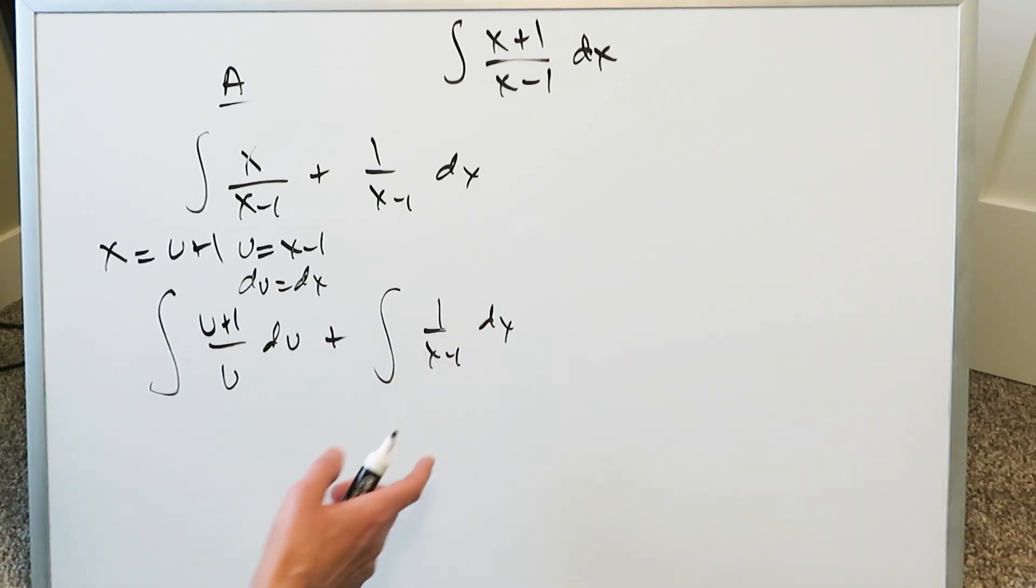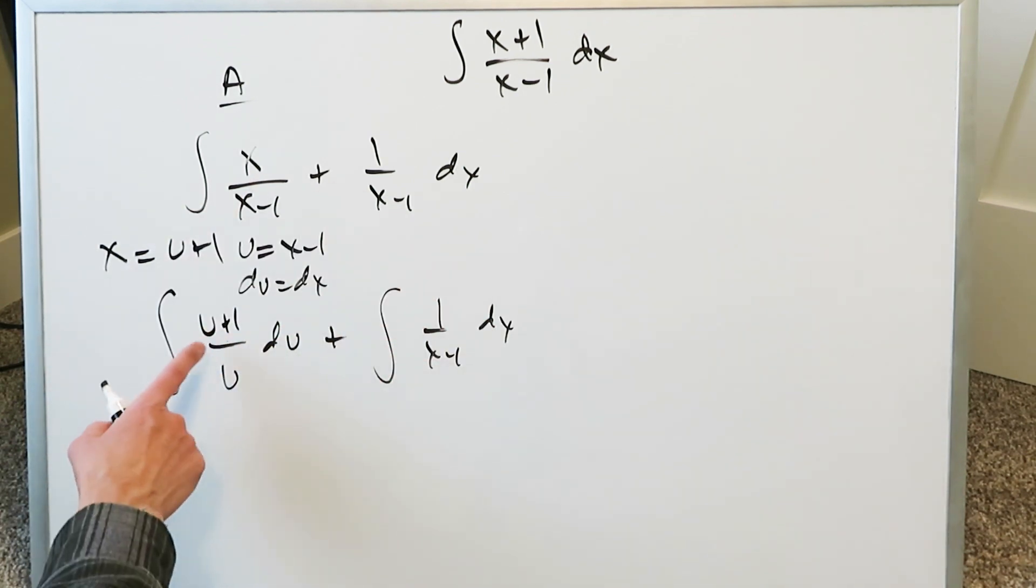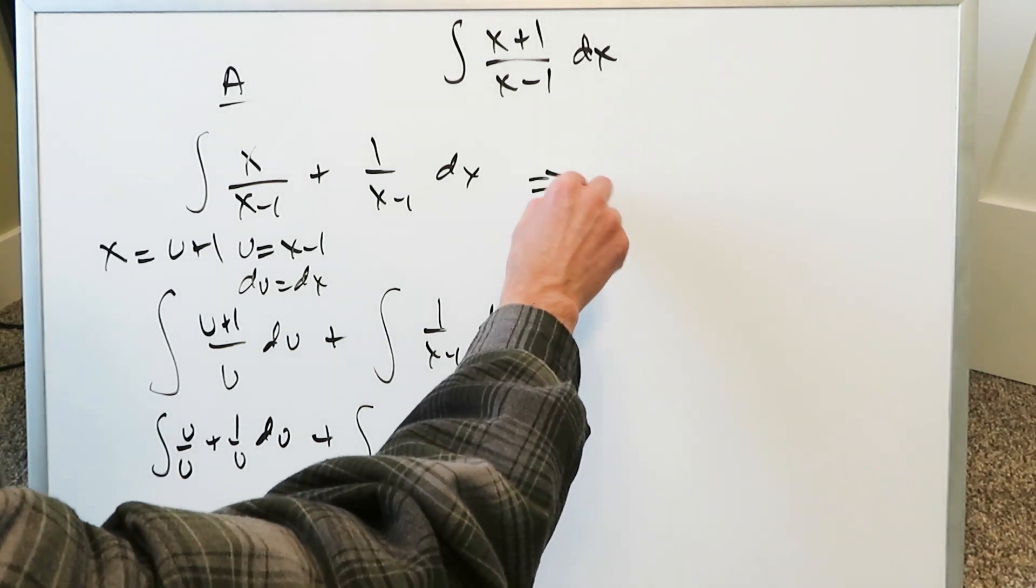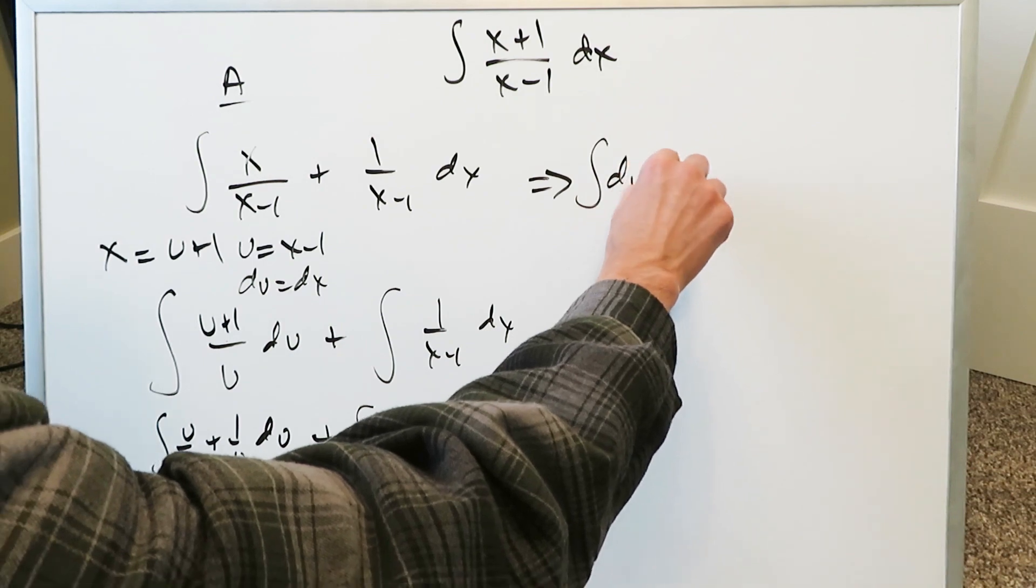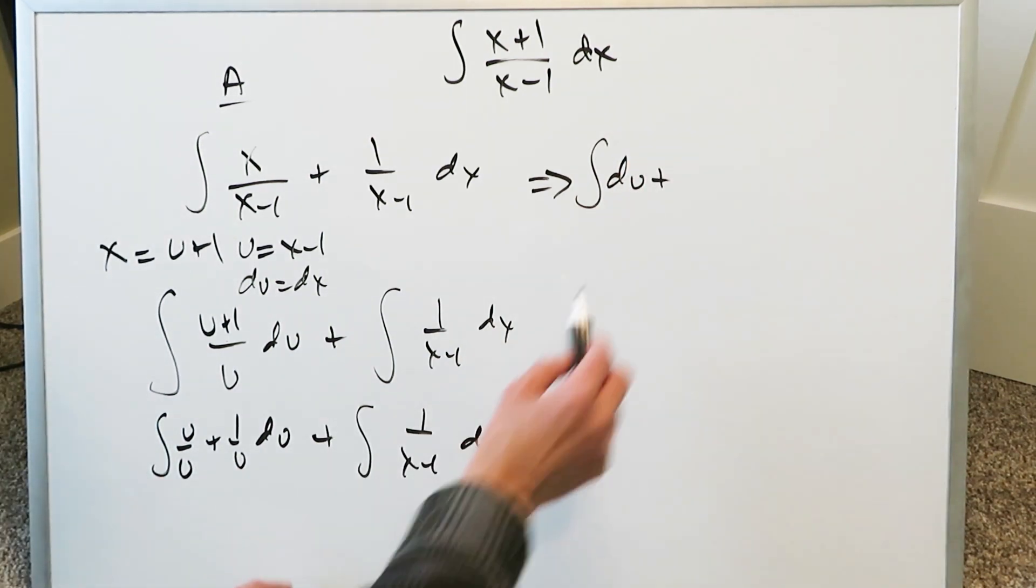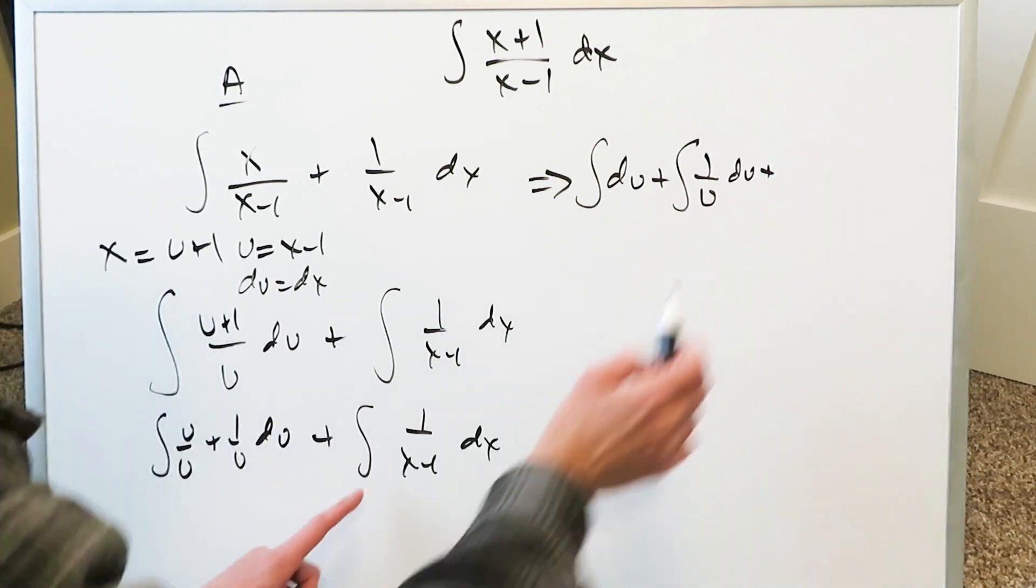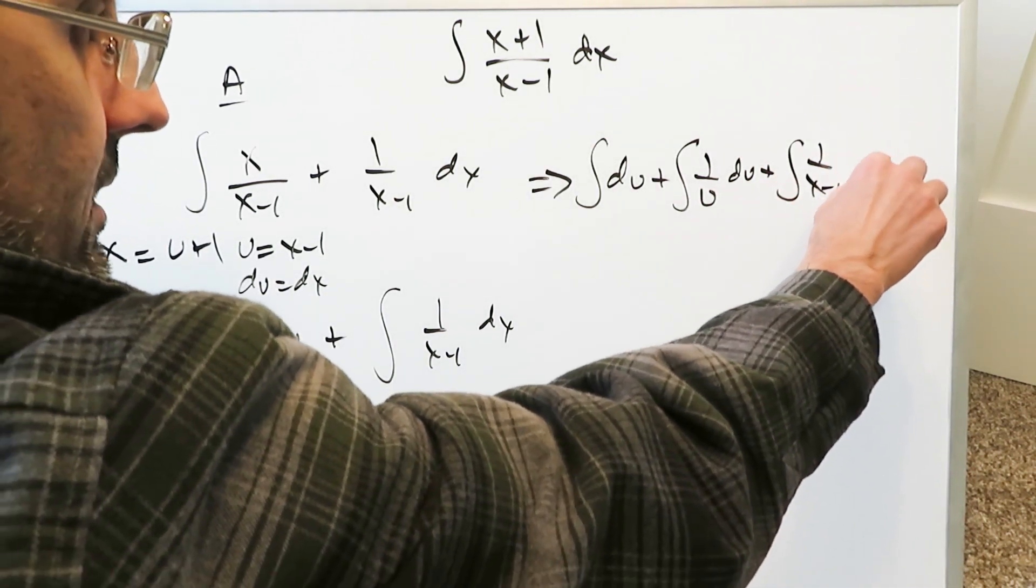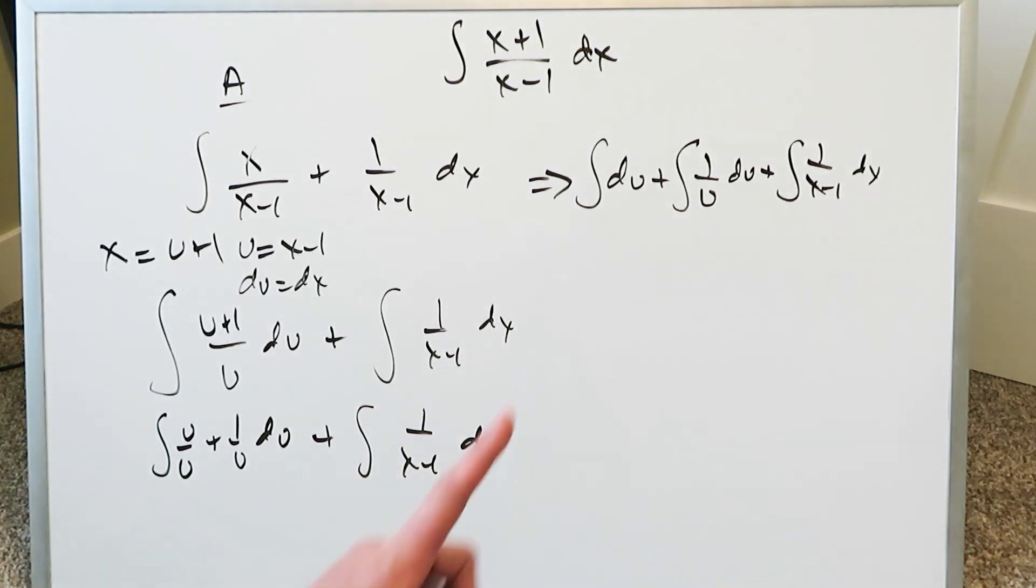The route B, the B approach I'll show you next is quicker and more efficient. You can separate this across the positive sign. You'd have u over u plus 1 over u du plus all of this 1 over x minus 1 dx. You know u over u is a 1 and this right here is a 1 over u. You're doing these individually. And you know this is not hard.